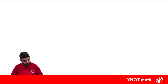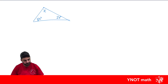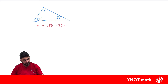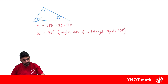Let's look at some examples. We have a triangle with angles x, 80 degrees, and 20 degrees, and we want to solve for x. We know all three angles add up to 180 degrees, so x equals 180 minus 80 minus 20, giving x equals 80 degrees. The property used is the angle sum of a triangle equals 180 degrees. Since x is 80 degrees, this is actually an isosceles triangle, meaning the two equal angles tell us the two corresponding sides are also equal.